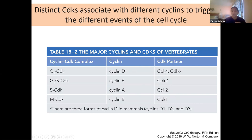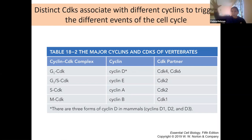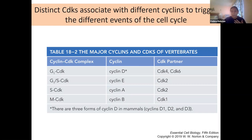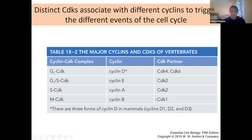Finally, cyclin B increases throughout S phase and G2 phase, reaching maximum level at the end of G2. Its rapid degradation is what triggers mitosis. Cyclin B activity is enhanced during G2 and it's rapidly degraded as the cell divides in mitosis, so that by the end of mitosis it is completely gone. It partners with CDK1.